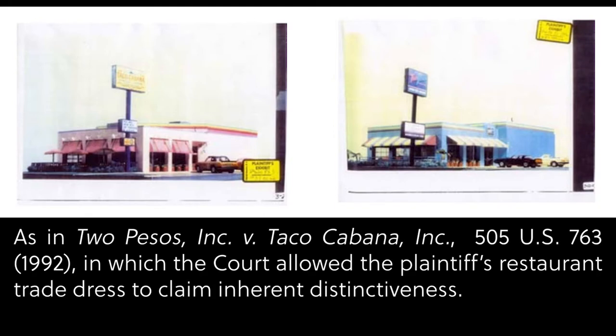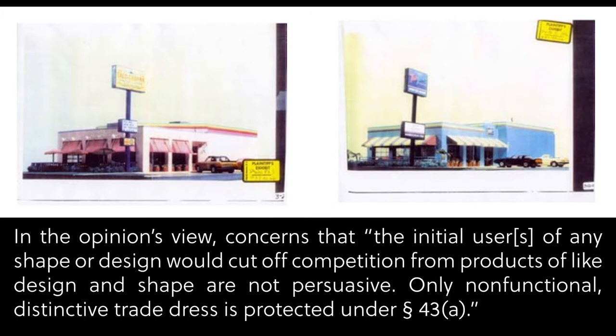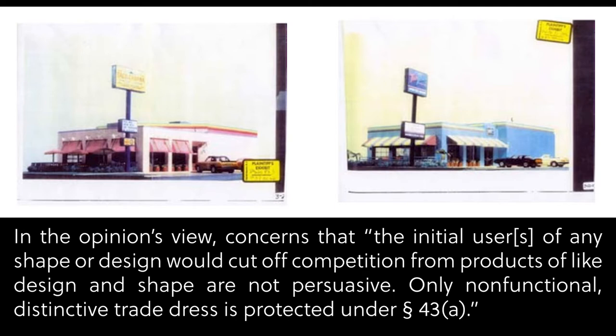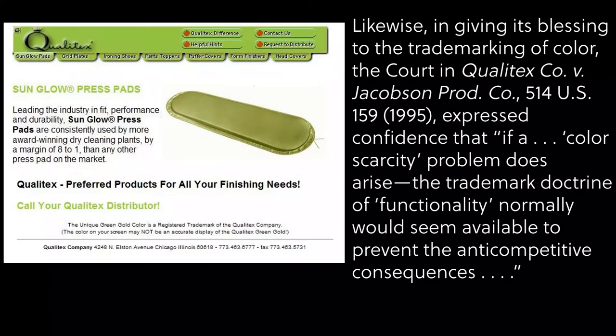One channeling function concerns the law within trademark doctrine as a whole. The functionality bar creates room for more kinds of things to be trademarks. It in effect lowers the distinctiveness bar. It does this because it gives courts some comfort that they can let some things into the trademark universe assured that if they turn out to be functional, if they turn out to be the kinds of things for which protection would interfere with competition, the courts can then invoke the functionality doctrine to exclude particular trademarks.